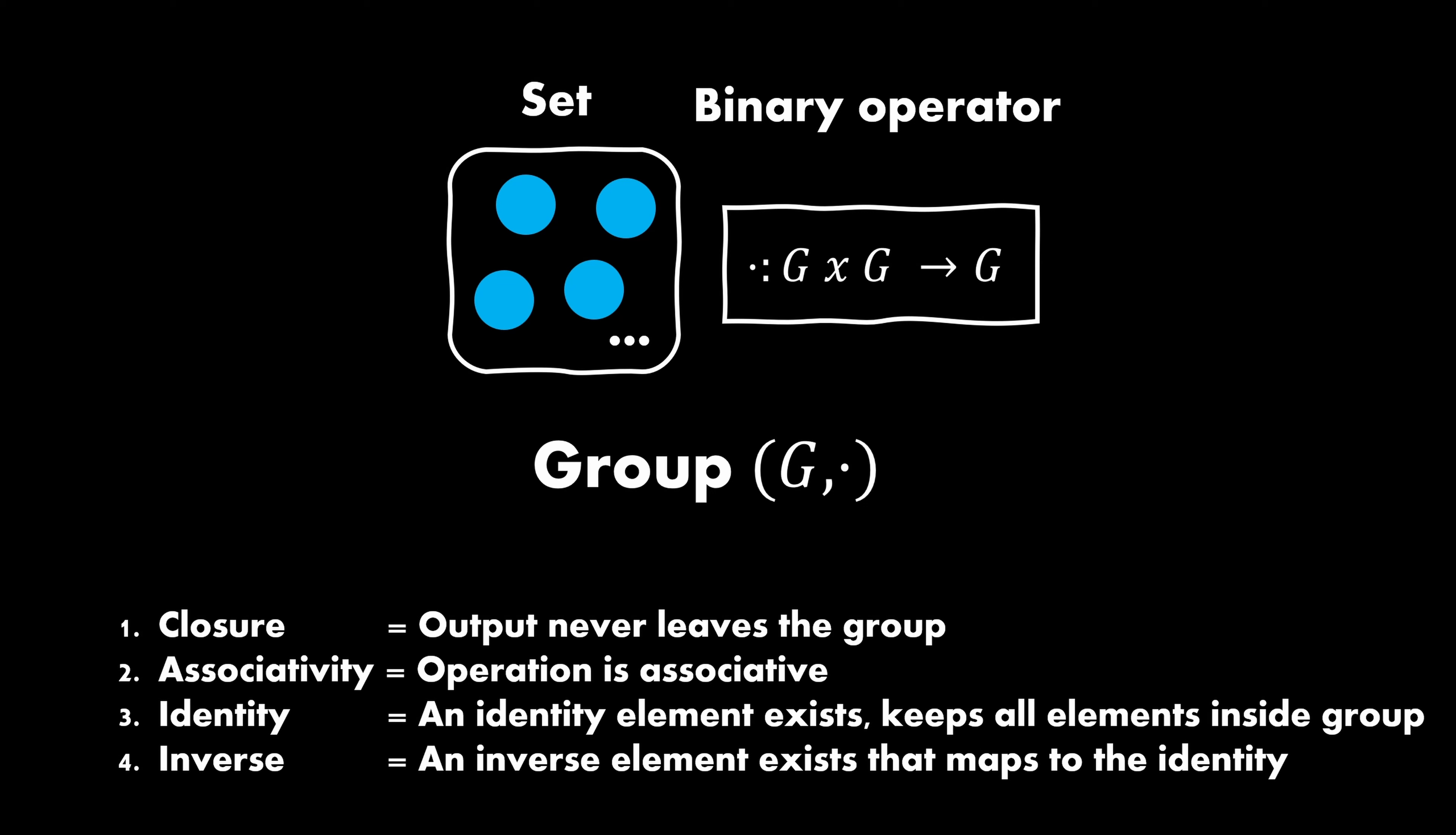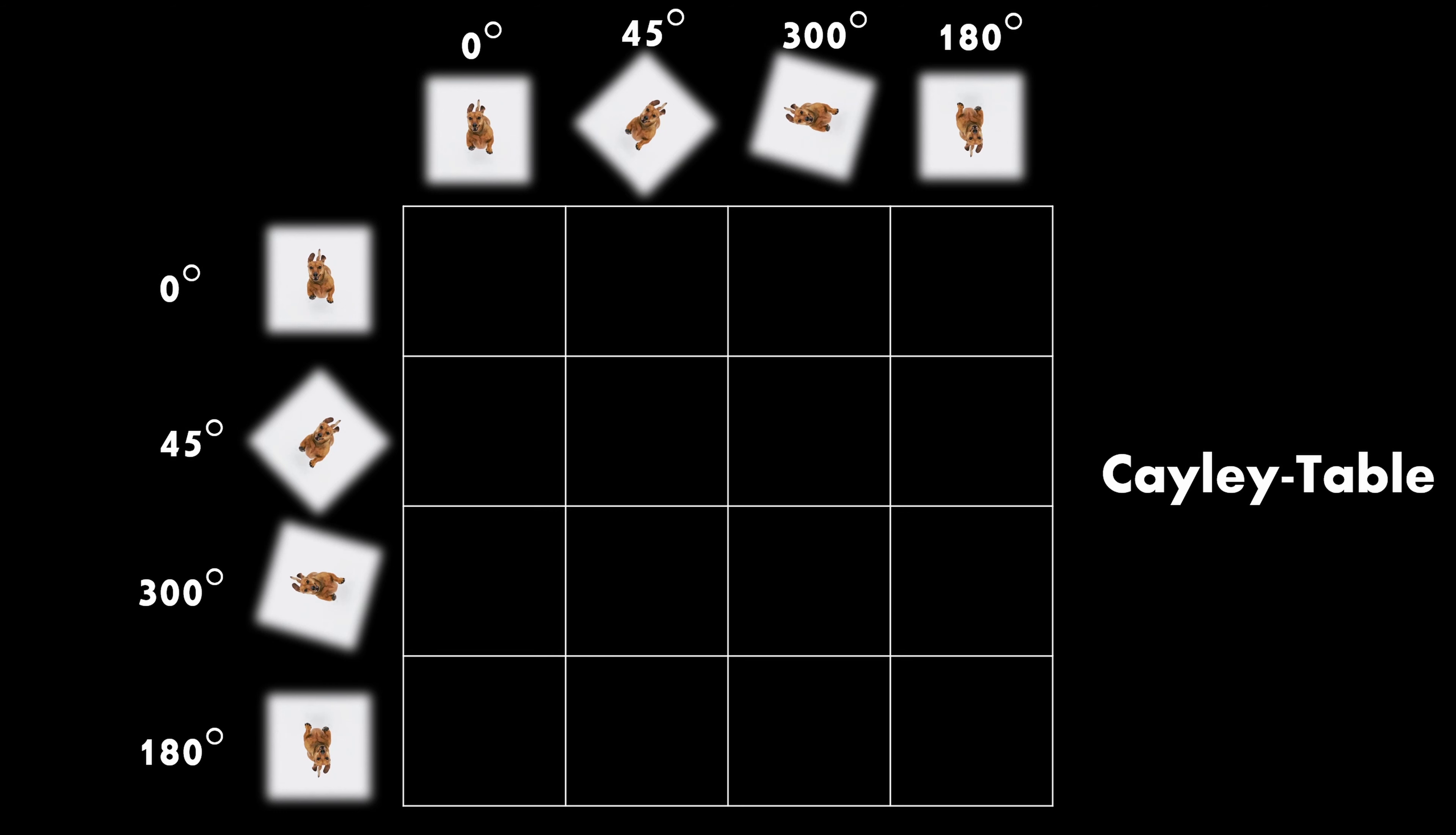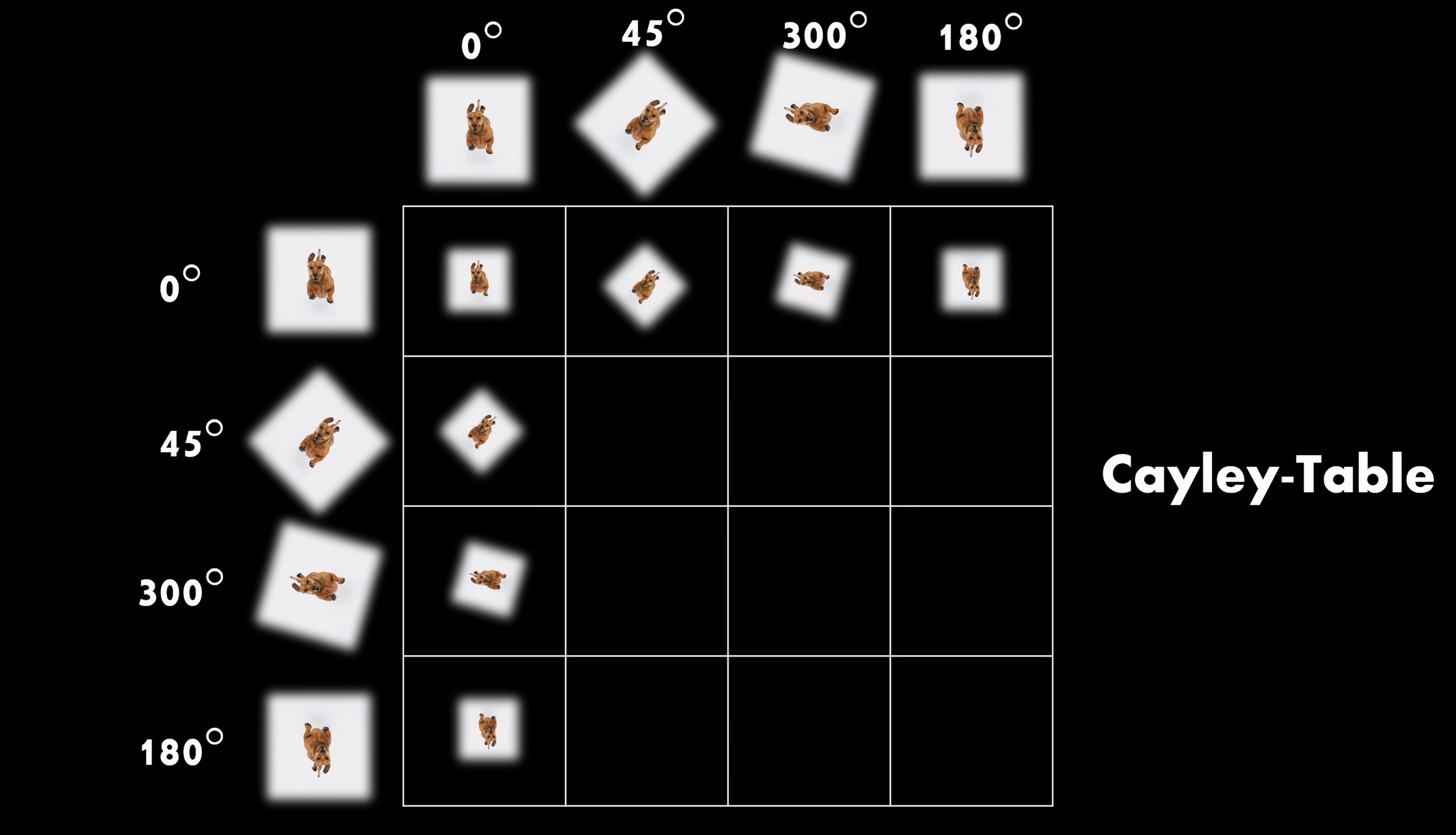Let's say we have these four possible rotation degrees and the matrix multiplication operation, which is performed on the matrices we've just seen. Do these elements form a valid group? One way to check this is to build a Cayley table, which works by arranging all possible products of the group's elements in a squared matrix. We can, for example, easily identify the identity element, which is rotation by zero degrees, as it will always keep the elements unaffected, as you can see in the first row and column. When continuing, we can see that the attribute closure is not fulfilled for this set of elements, because if we apply 45 degrees rotation twice, we end up with 90 degrees, which is not part of our group. Therefore, it's not a valid group definition.